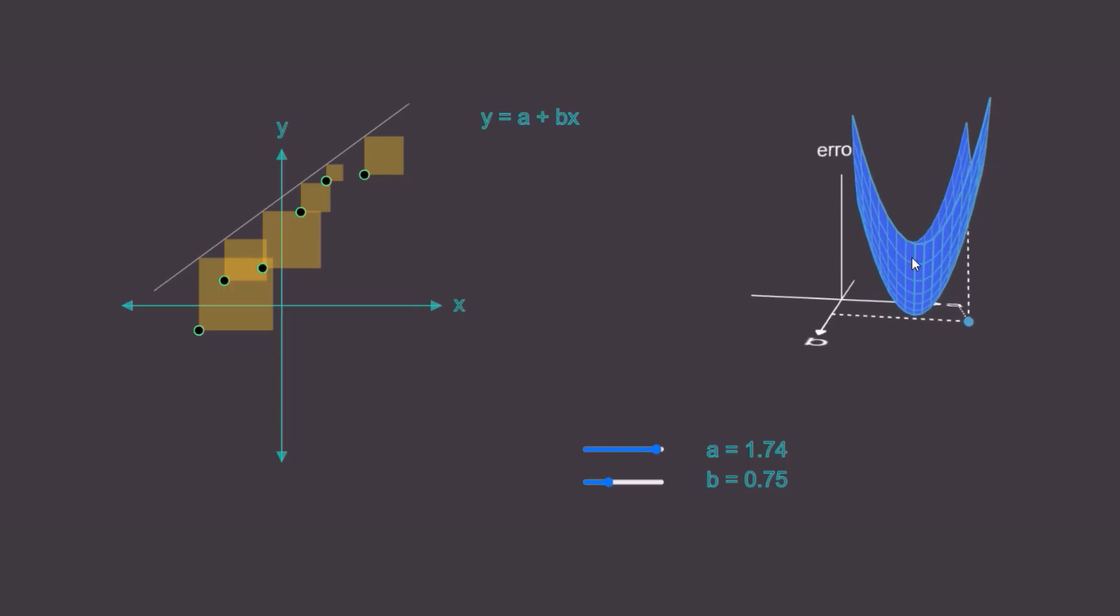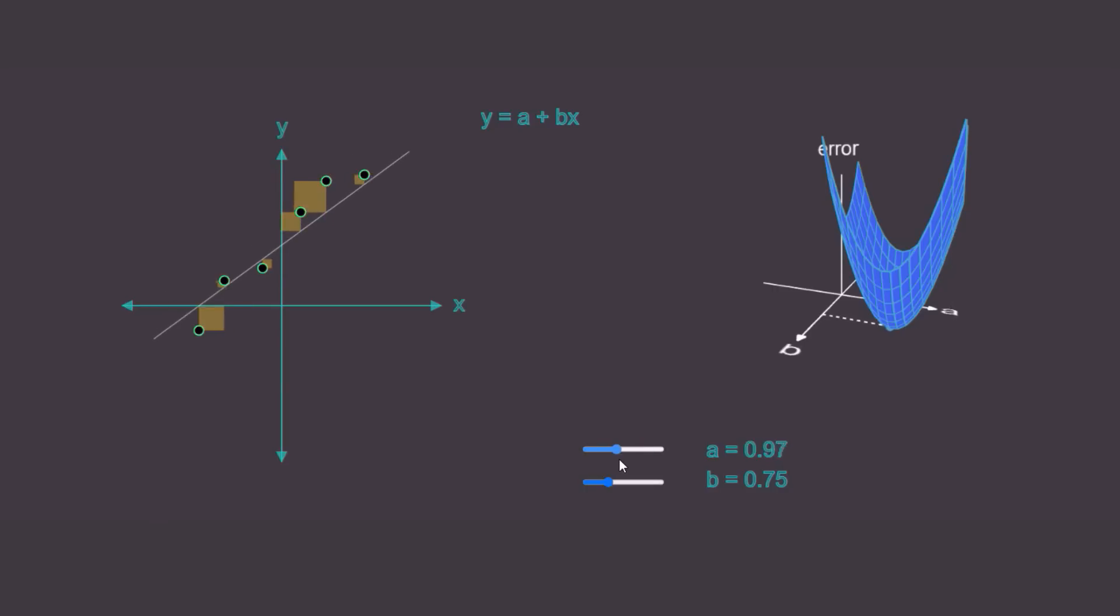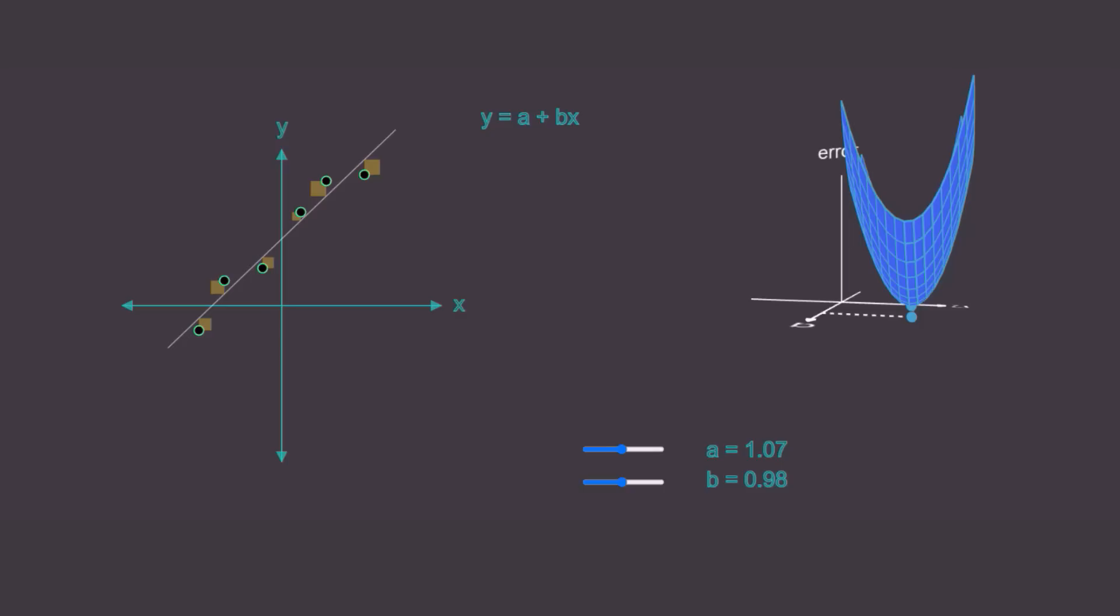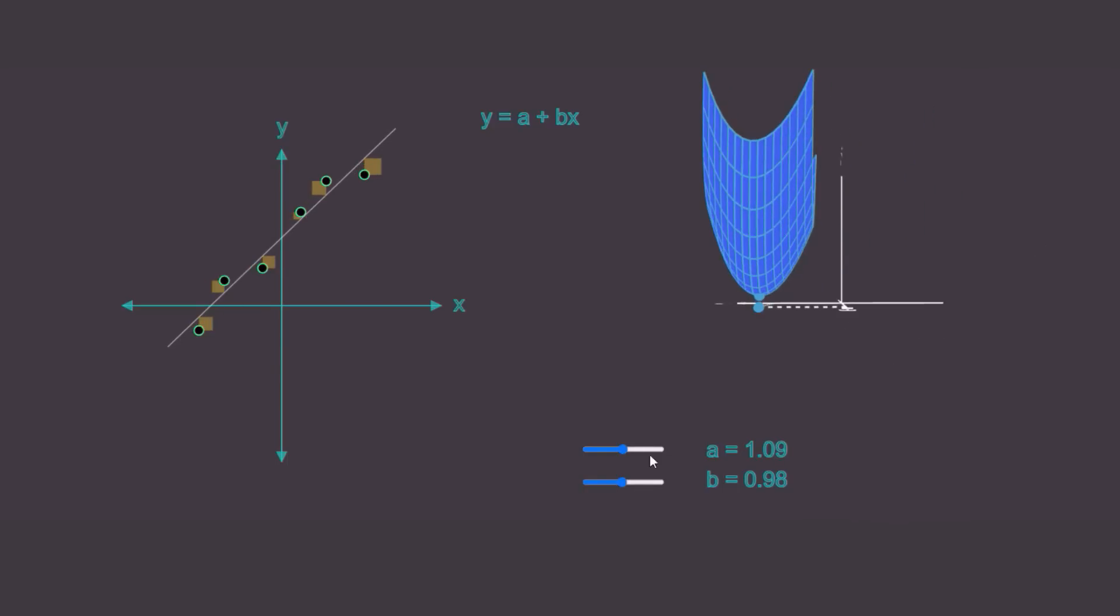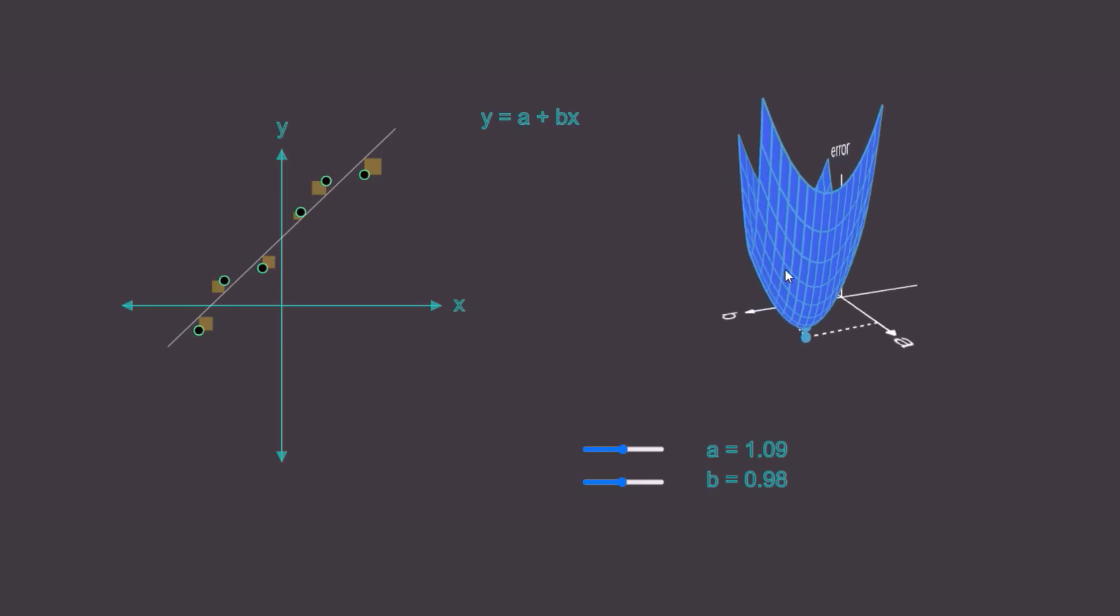Just like last time, the best fit will occur at the point that minimizes this error. Now, let's have a think about how we can quantify this minimum point. Well, if we keep b fixed and vary a, then the minimum can only occur when the slope of the error versus the a curve is zero. In other words, where the partial derivative of error with respect to a is zero. Likewise, if we keep a fixed and vary b, then we can see that the minimum can only occur when the slope of the error versus b curve is zero. And now we're armed with everything we need to solve our minimization problem.